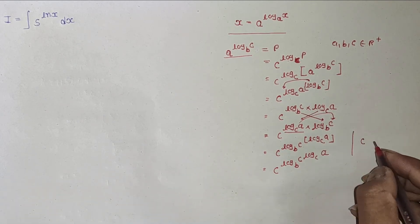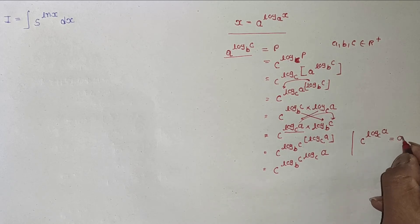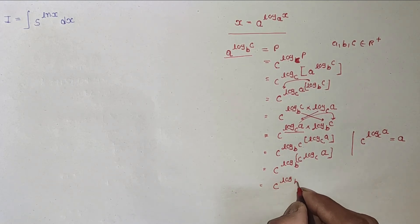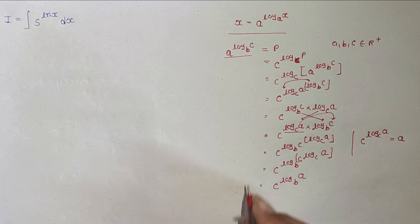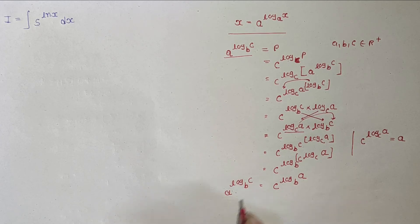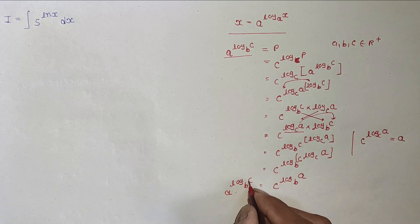Since c^(log_c a) = a, the expression simplifies. Therefore we can write: a^(log_b c) = c^(log_b a). The rule is that a and c can be swapped.